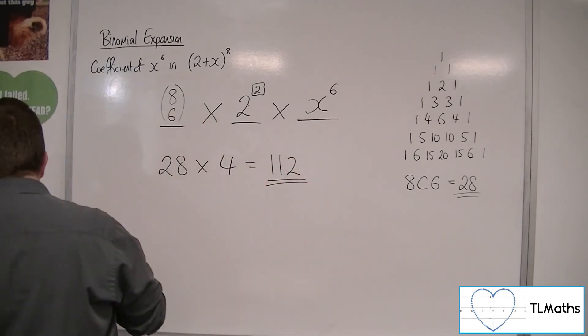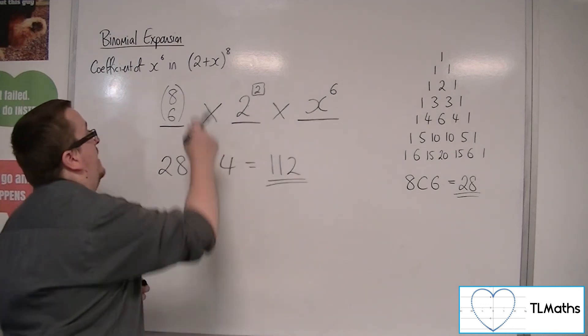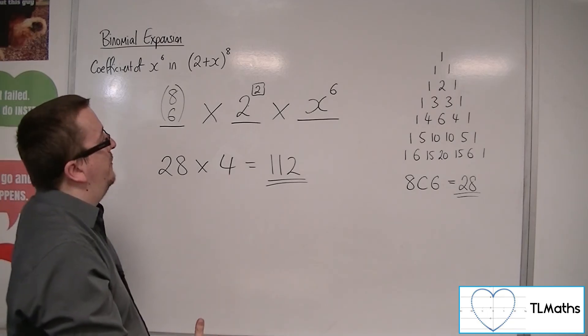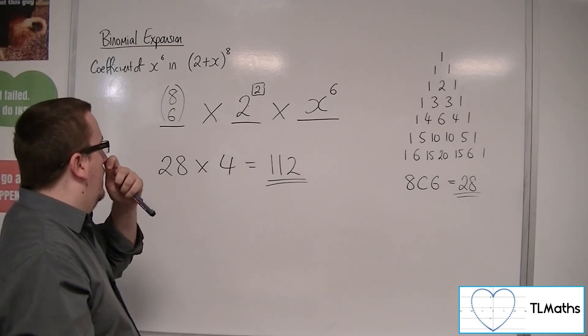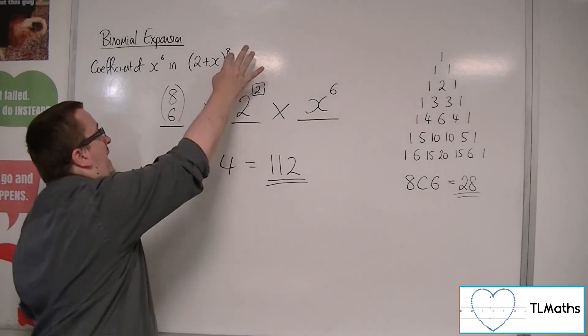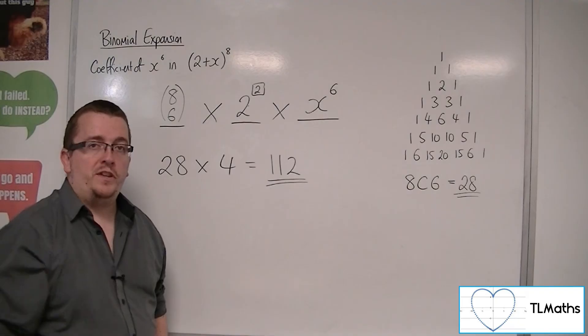So I would have 112 x to the 6 in my expansion. In the next few videos we're going to see some more examples of this, getting a little bit of practice with using the NCR function for when that power there is larger than 8.